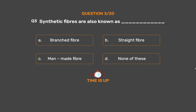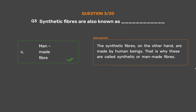The correct answer is Option C: Man-made fiber. Synthetic fibers are made by human beings. That is why these are called synthetic or man-made fibers.